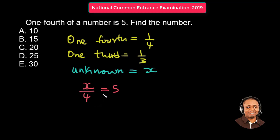So we just go ahead to multiply both sides of the equation by four. So four, we cancel four on the left-hand side. So we have x on the left-hand side. On the right-hand side, we have five times four, which will give us 20. So the unknown number is 20.